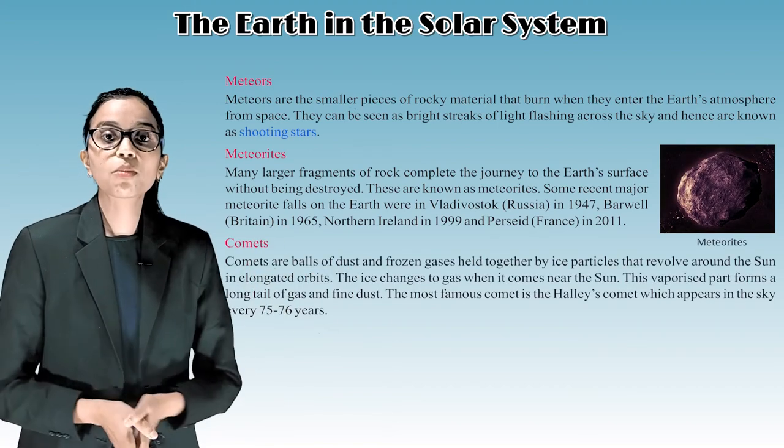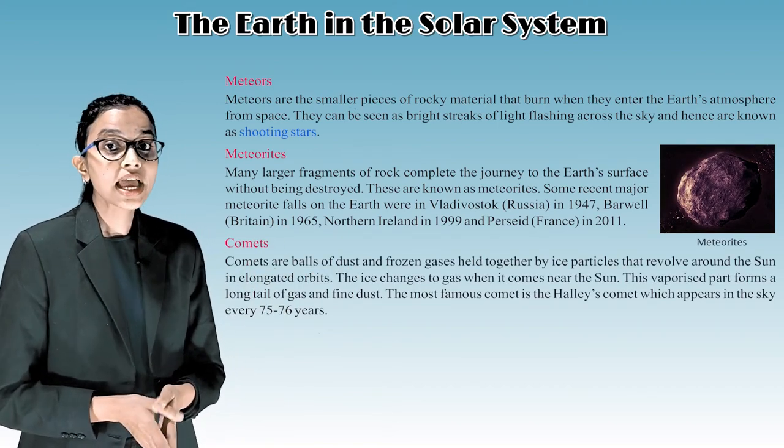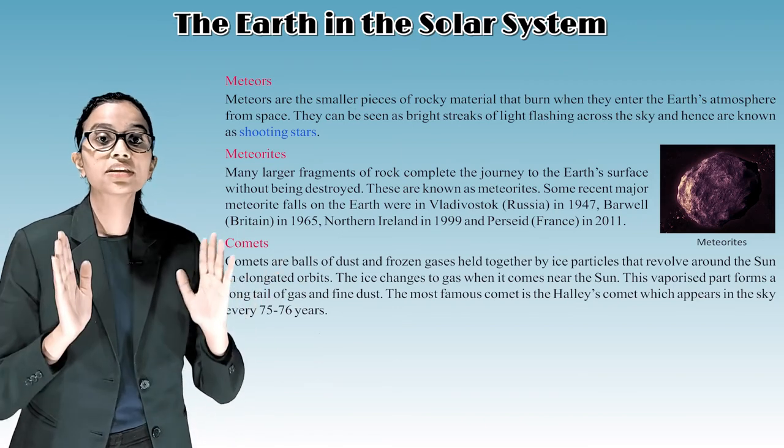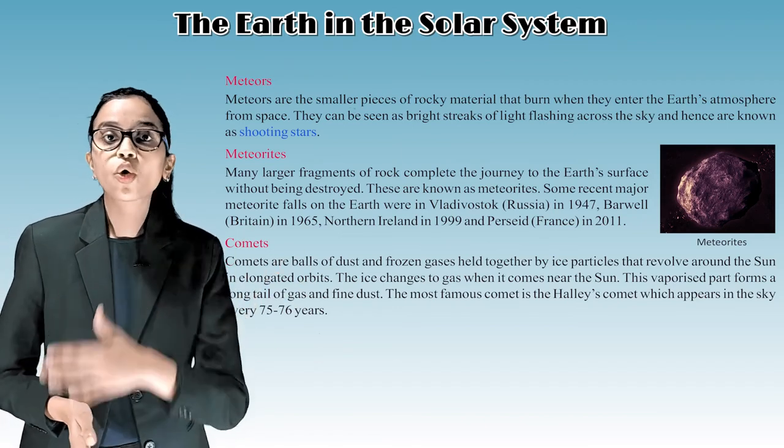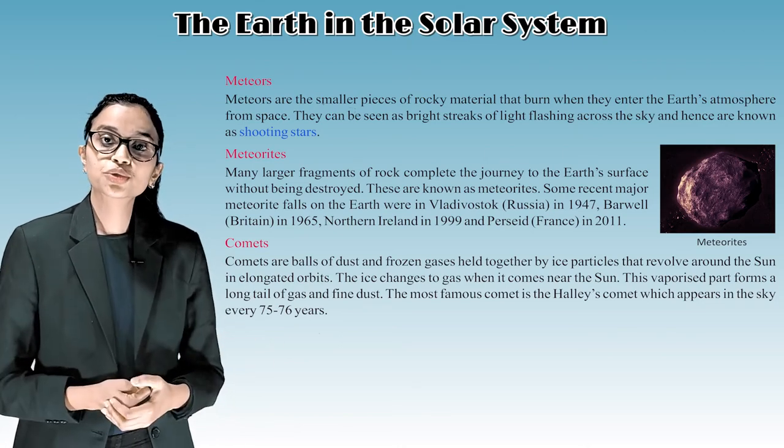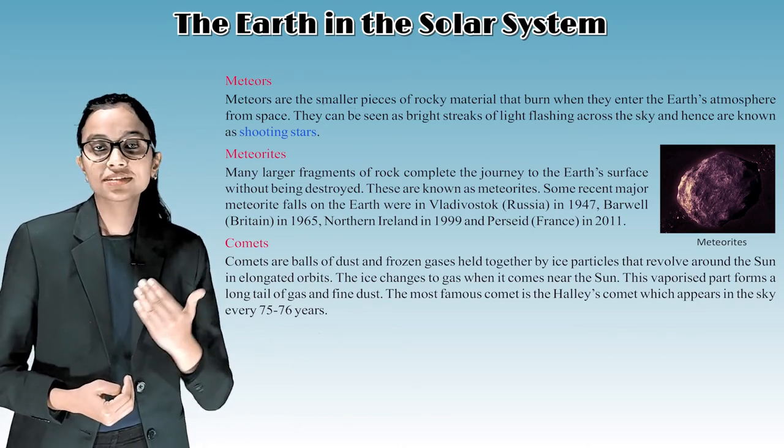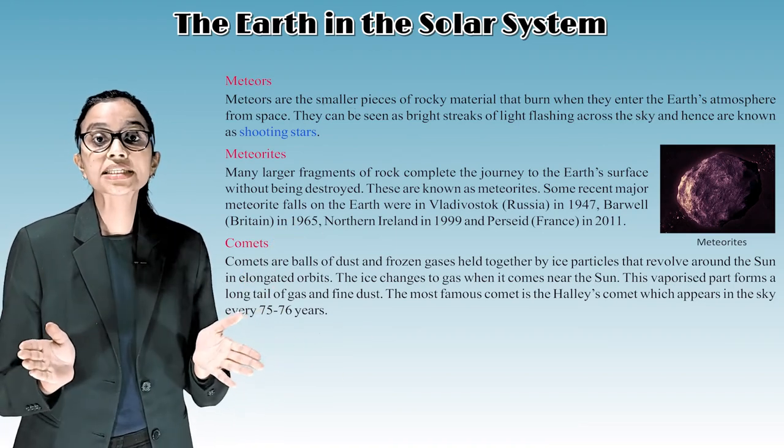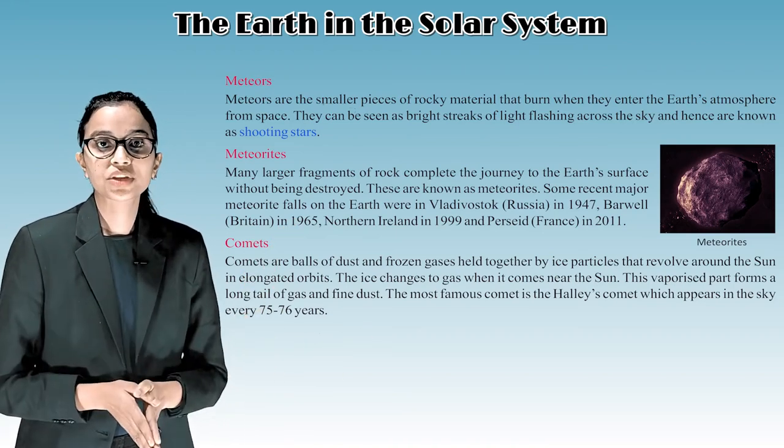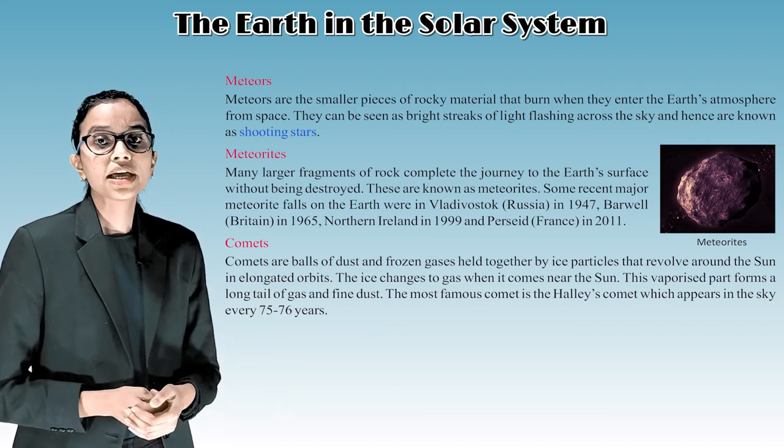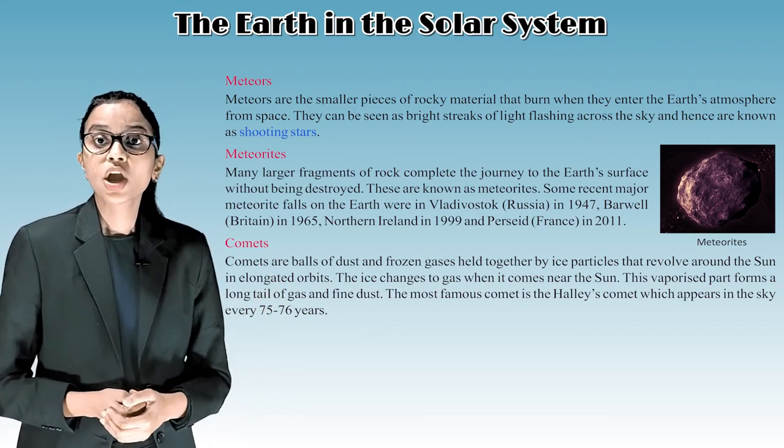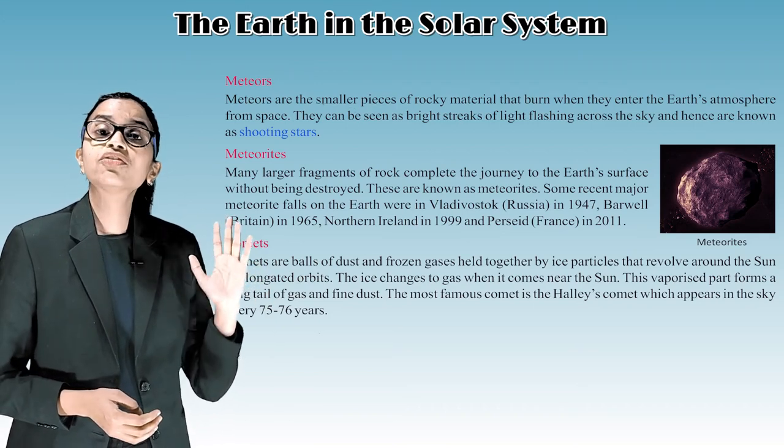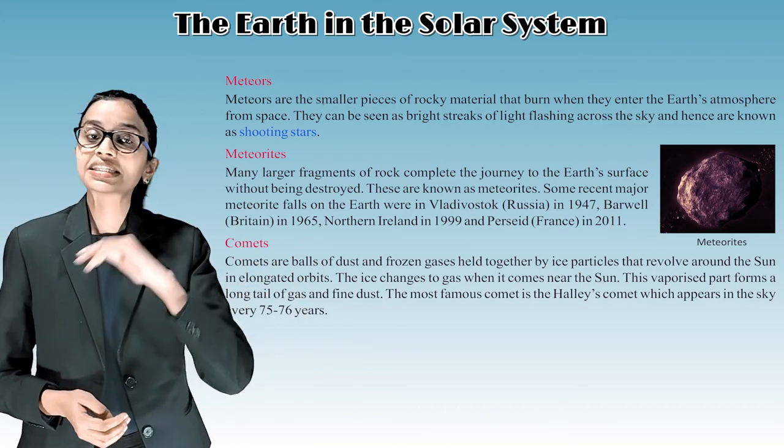Comets are balls of dust and frozen gases held together by ice particles that revolve around the sun in elongated orbits. The ice changes to gas when it comes near the sun. This vaporized part forms a long tail of gas and fine dust. The most famous comet is the Halley's comet which appears in the sky every 75 to 76 years.